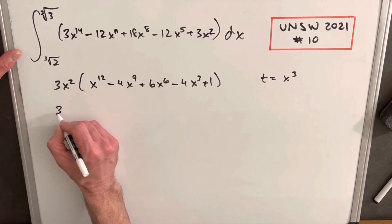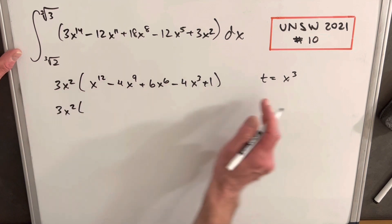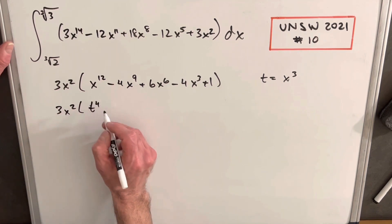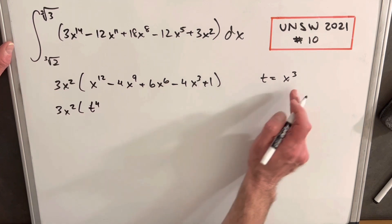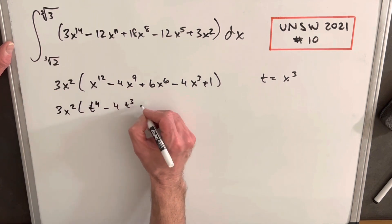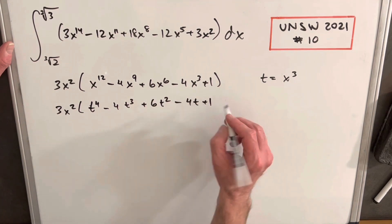We'll leave this in terms of x out here. I'm just doing this to help us with the factoring, to make the factoring more clear. So we can write this as t to the 4th minus 4t cubed plus 6t squared minus 4t plus 1.